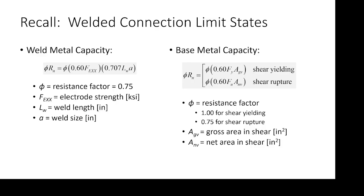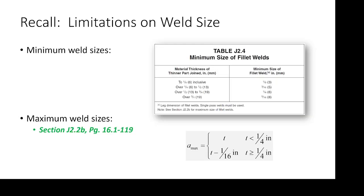Let's talk about our final topic on exam two, which is weld connection design. If I give you a welded connection — a lap connection, what have you — determining the maximum allowable applied load on that connection should be pretty easy. We have three limit states: the weld metal capacity, the base metal capacity under yielding, and the base metal capacity under fracture. We determine a φRN for each of those, and whichever one is the minimum, that's the one that governs the capacity.